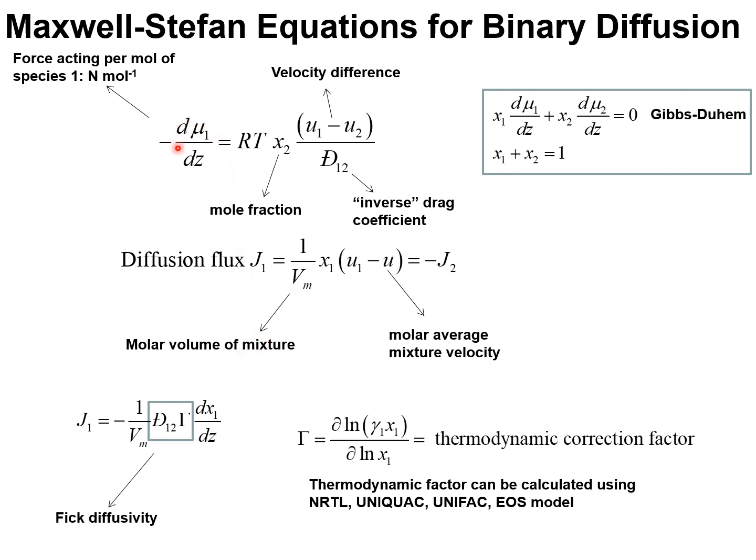Rather than use the chemical potential gradient as a driving force, it is convenient to define a thermodynamic correction factor given by this expression, which quantifies departure from ideality. Indeed, if the activity coefficient is unity, gamma is equal to unity.